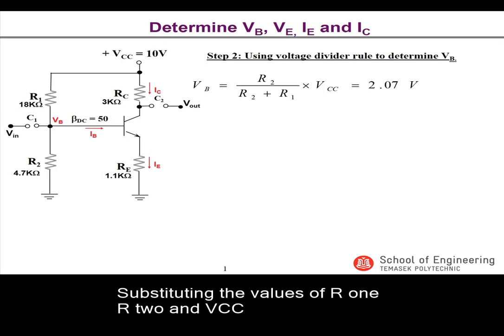Substituting the values of R1, R2, and Vcc, we get 2.07 volts for VB.